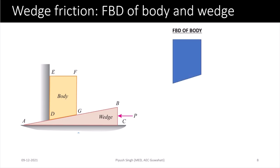Isolating the body from the system, the first force is the weight of the body W. Due to the wall, there is a normal reaction Rw acting on the body. In the limiting case, the body tends to move upwards, so the frictional force on the body due to its relative motion with the wall will act in the downward direction.